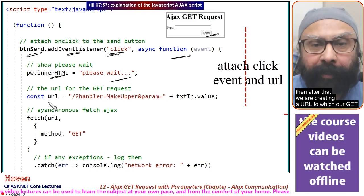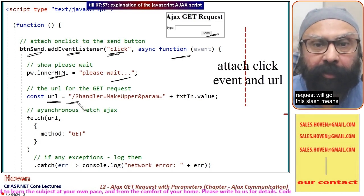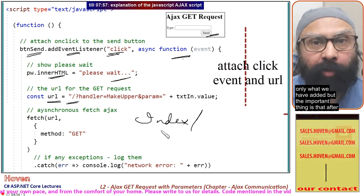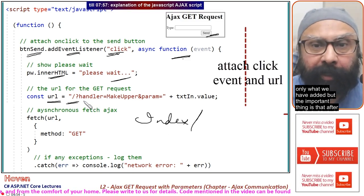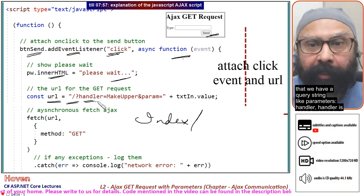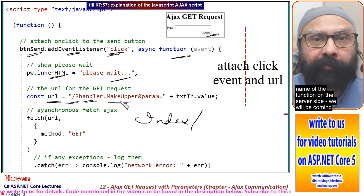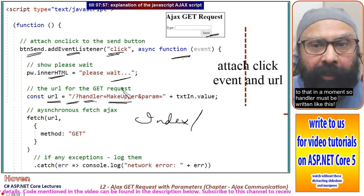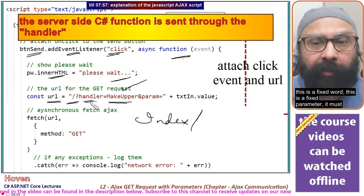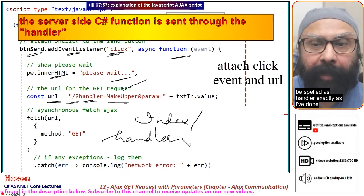Then we create a URL to which our GET request will go. The slash means it will go to the homepage. But the important thing is that after that we have a query string: handler=makeupper. Makeupper will be the name of the function on the server side. Handler is a fixed parameter and must be spelled exactly as shown.